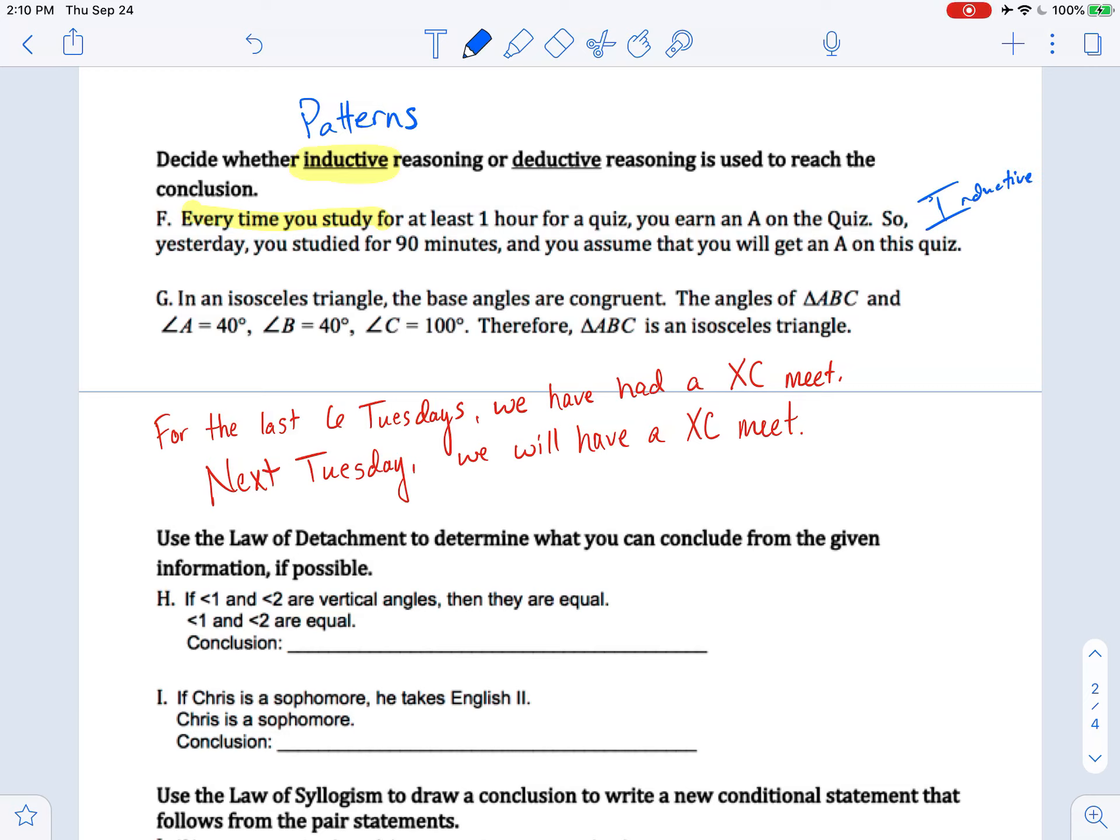And for G, in an isosceles triangle, okay, interesting. I've got some vocab words here. The base angles are congruent. The angles of ABC are 40 degrees, 40 degrees, and 100 degrees. Therefore, ABC is an isosceles triangle.